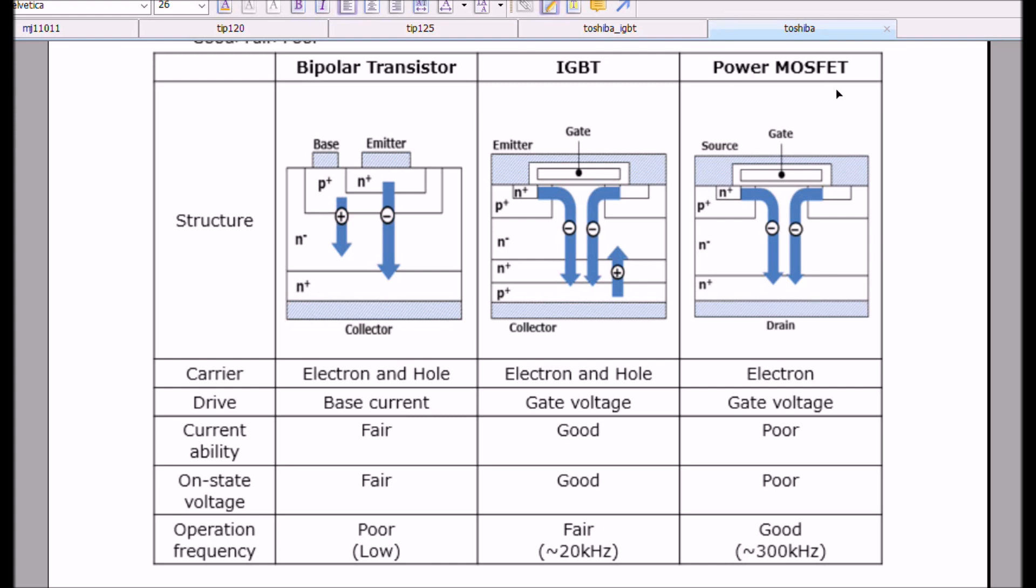Now we come to the power MOSFET. In this case, this is an N-channel device. A positive charge relative to the source will generate an N-type region where charge carriers, in this case exclusively electrons, move from a negative source to a positive drain. The carriers are exclusively electron flow. This is a voltage operated device, but its current capabilities are poor, on-state voltage is poor. But the frequency response is excellent, far superior to IGBTs or bipolar transistors.